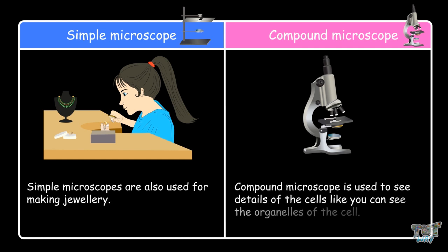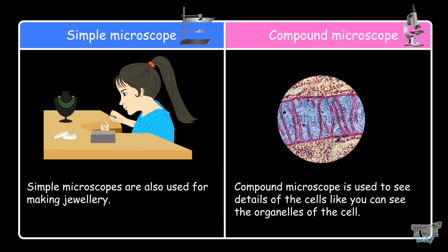The compound microscope is used to see the details of the cells, like you can see the organelles of the cell.